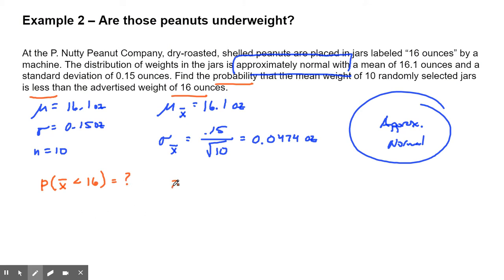Let's find our Z score. To find your Z score, take your value (16) minus your mean (16.1), and divide by the standard deviation of the sampling distribution (0.0474). The top is negative 0.1 divided by 0.0474. I got a Z value of negative 2.1097. I rounded to three decimals, so your Z value is negative 2.110.